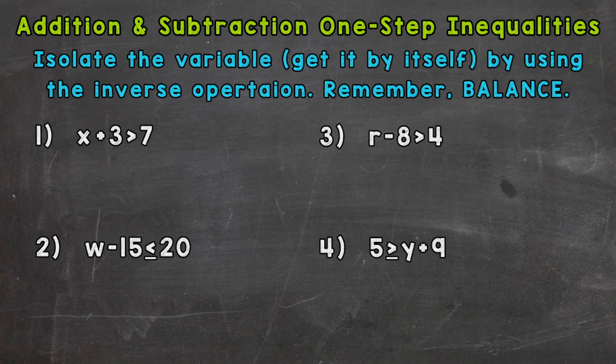So let's jump into number one, where we have x plus 3 is greater than 7. So we need to isolate the x. We are adding 3 to x. We need to do the opposite or inverse of that, which would be subtracting 3. So let's subtract 3 from the left side in order to isolate the x, because those 3's are going to cancel out.